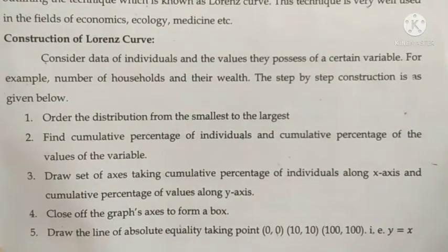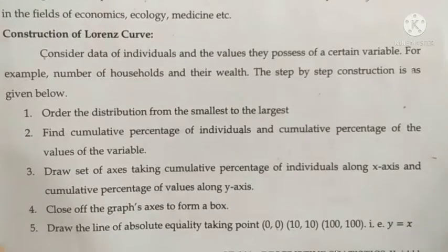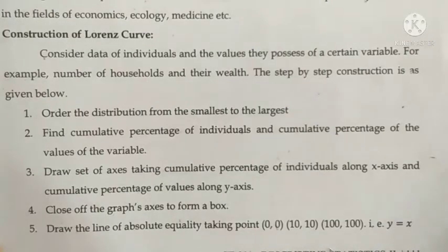Fifth, draw the line of absolute equality, taking points (0, 0), (10, 10), and (100, 100). This means that whatever percentage of people, the same percentage of income is assigned to them — 10% of people own 10%, 20% own 20%, and so on.